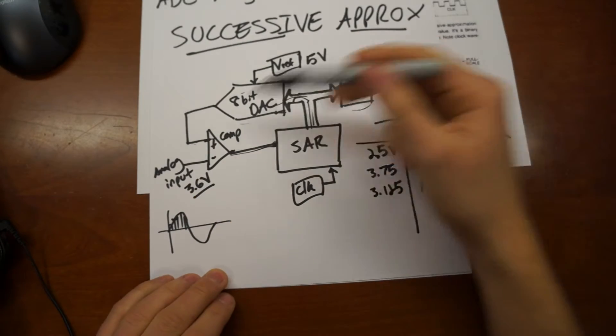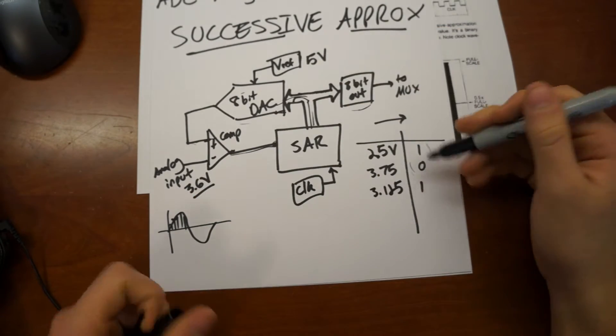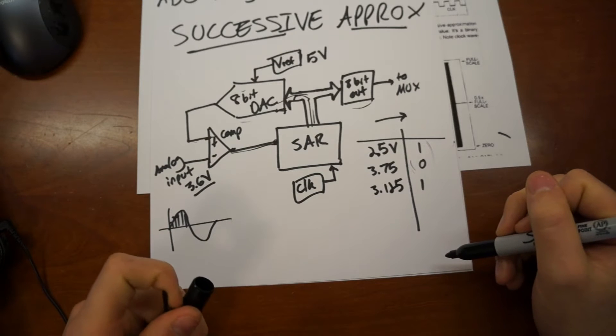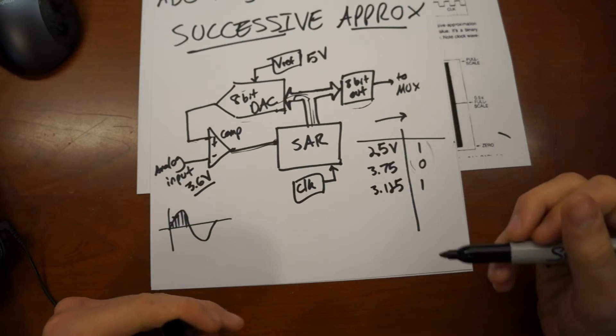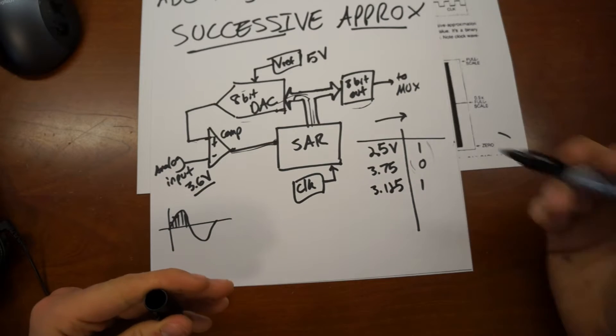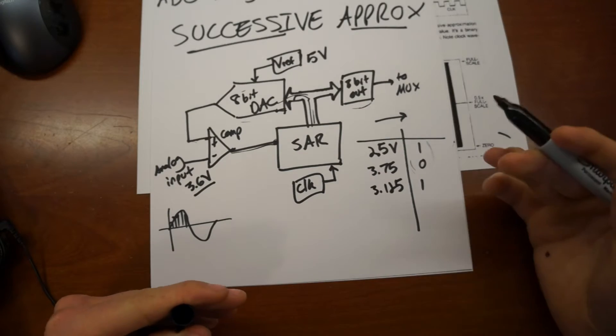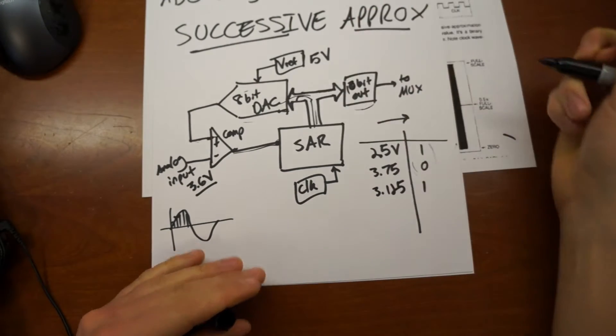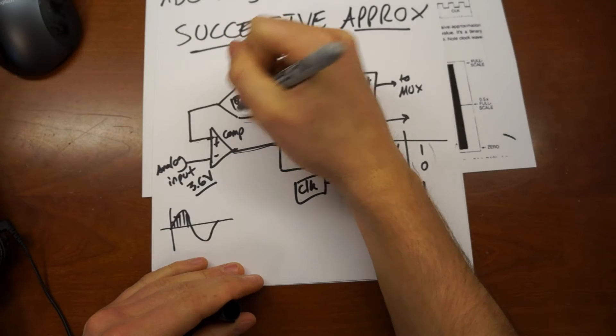And so this iteration method keeps going for however many bits your SAR is resolving to. And in our case, the Arduino, I think it's a 10-bit. I should probably have a 10 here, I guess.